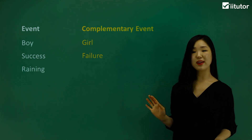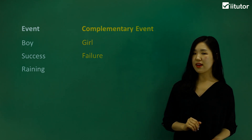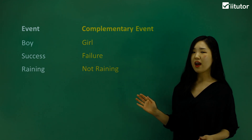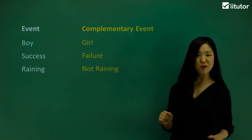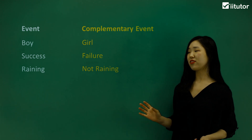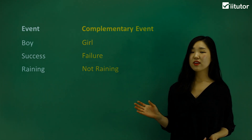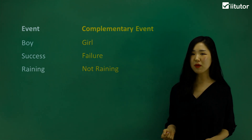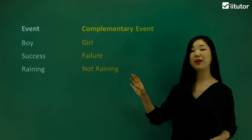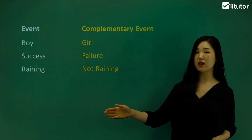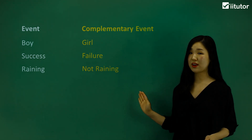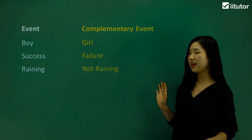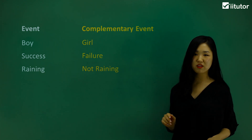Now let's say raining. The complementary event of raining is not raining — you have to say 'not raining'. A lot of people tend to say sunny or something like that, but sunny is not the only complement of raining. The complement of raining could be sunny, hailing, storming, or windy. There could be so many different types of weather included in the complement of raining, so you have to say 'not raining' to include all the different components of weather.